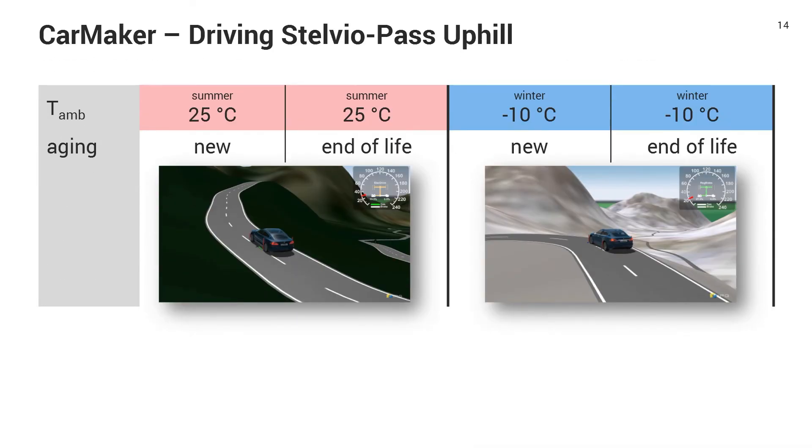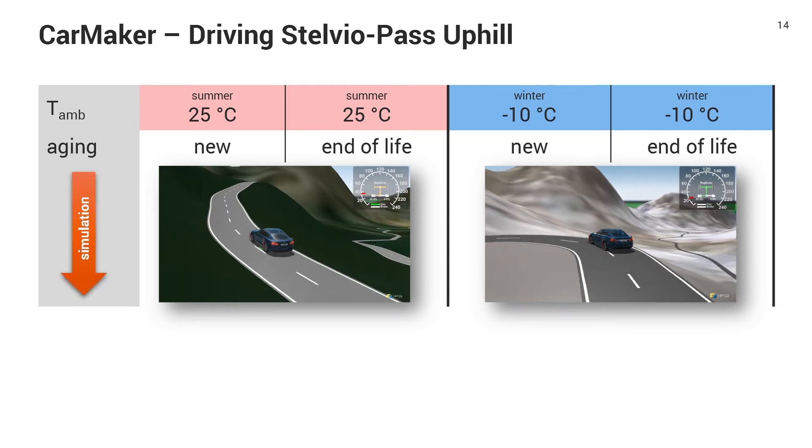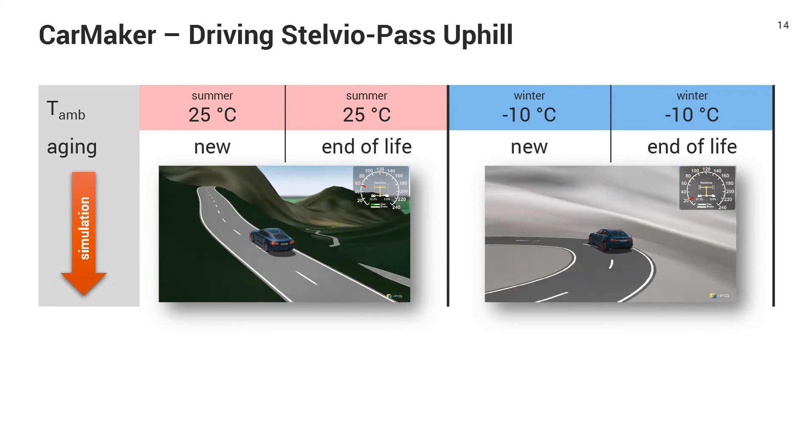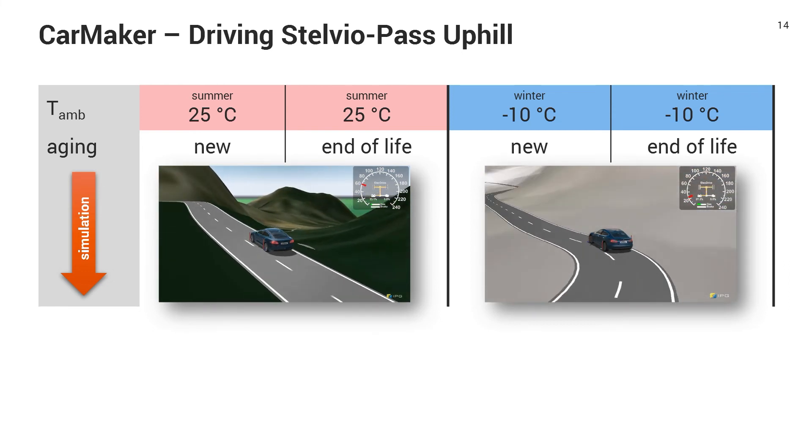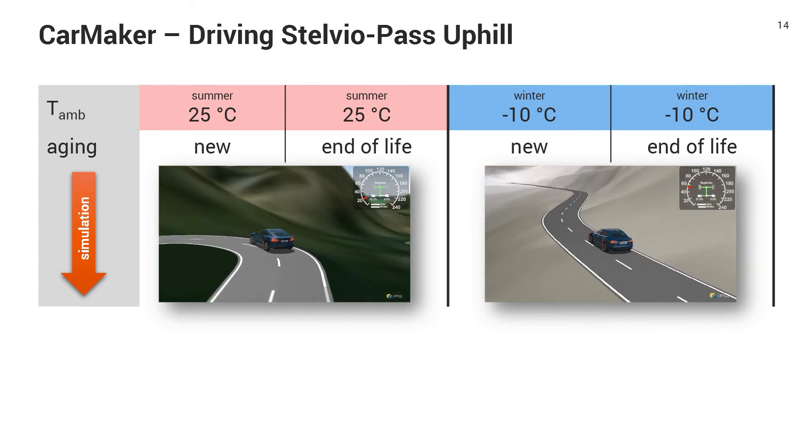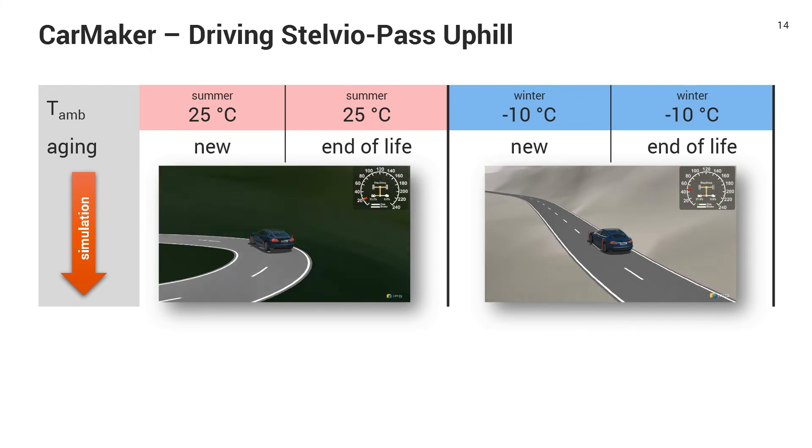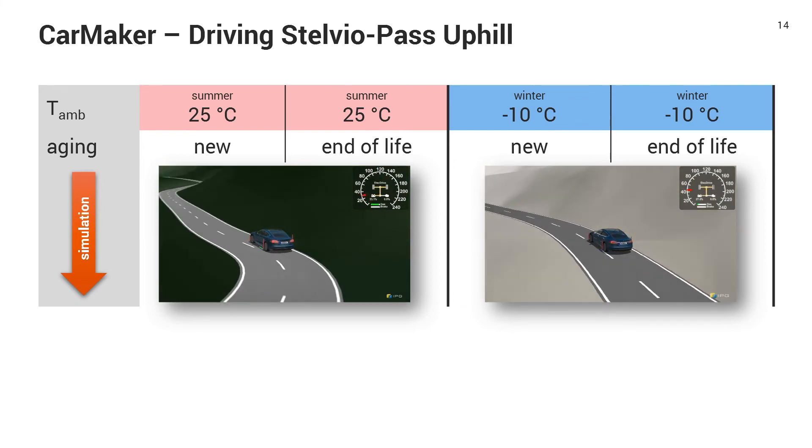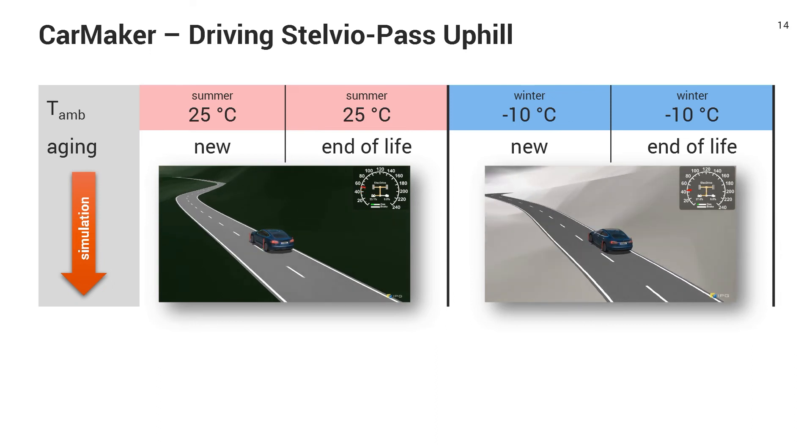So if we drive uphill, I want to analyze two different scenarios. First is a summer scenario where we have an ambient temperature of 25 degrees C and the second scenario is a winter scenario with minus 10 degrees C. I set the aging state of the cell to two different levels. One is a new cell and the second is the end-of-life cell. And if you start the simulation, you can see this in the video now, the car drives up the hill and by doing so we precisely use our model to calculate the power that the battery can supply and how it heats up and how the state of charge is reduced.